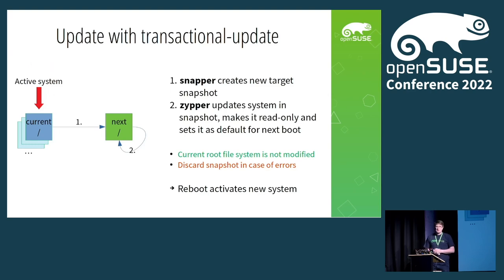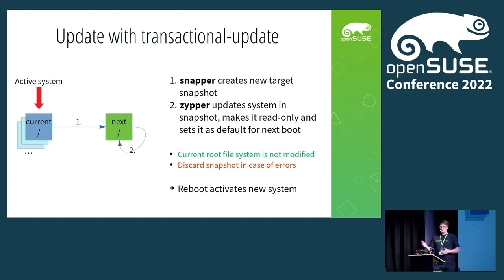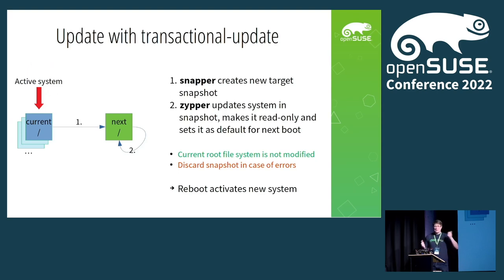If there's an error — for example, a post-install script fails, a package can't be downloaded, or your computer crashes — then if it can still recover, it will just delete the snapshot again, and we're back to the previous blue stack. If the computer crashes, it will be marked as in progress and can be deleted at a later time. Everything we do here does not influence the currently running system.